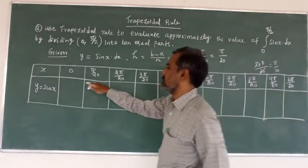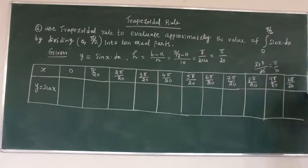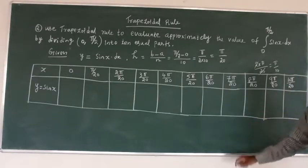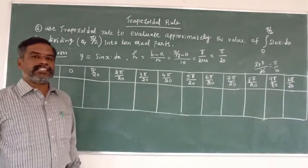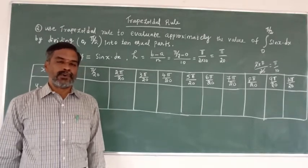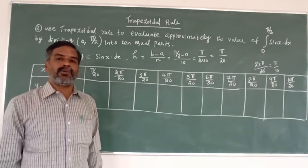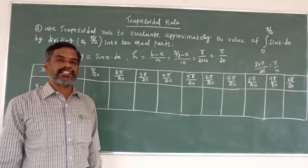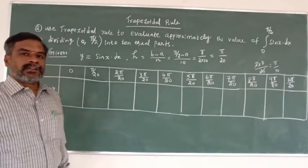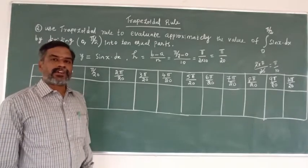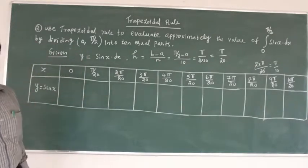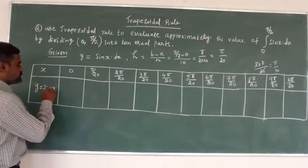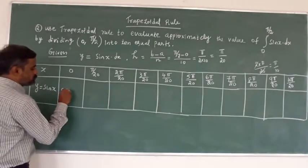The last x value is 10π/20, which simplifies to π/2. So the limit goes from 0 to π/2. Note: in the calculator, we must change to radian mode instead of degree mode. Starting with sin(0) = 0.000000.